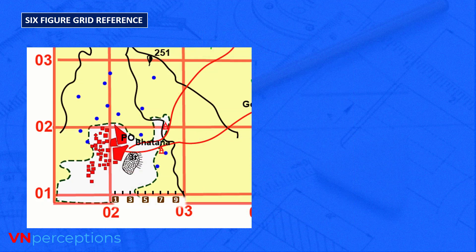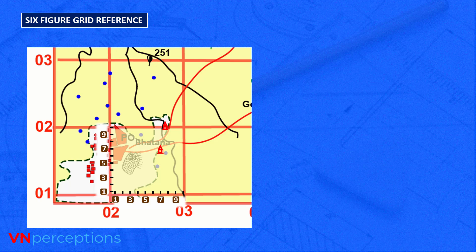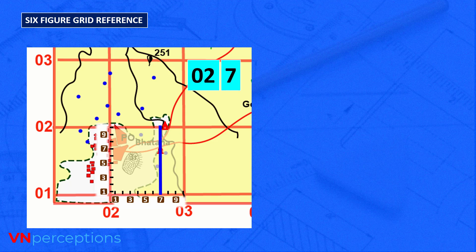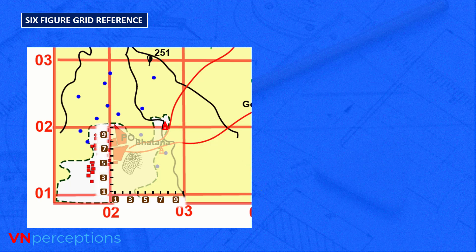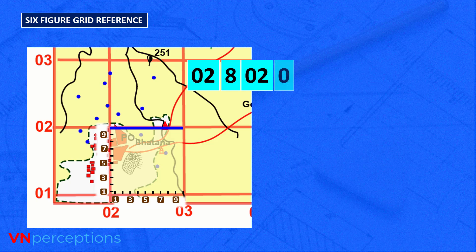Another example: locating a temple. The four-figure for this grid is 0201. After 02 for the easting, the extension is 7, and after 01 for northing, the extension is also 7. So the answer is 027017. If the temple is on the northing line 02, then the four-figure is 0202; the easting extension is 8 and the northing extension is 0, so the six-figure is 028020.